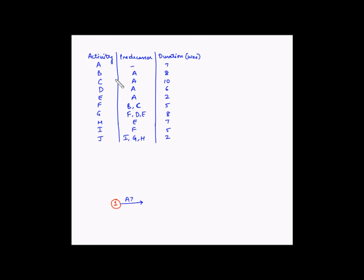Activities B, C, D, and E depend on the completion of activity A. So let us draw the ending event for activity A and the starting event for B, C, D, and E. Let us give this the number 2.